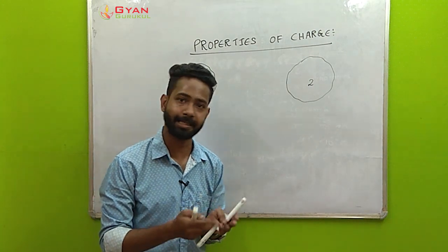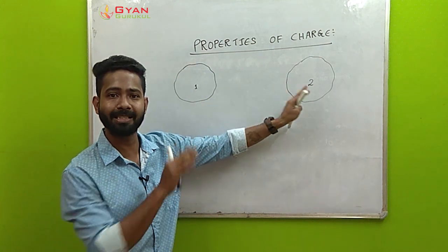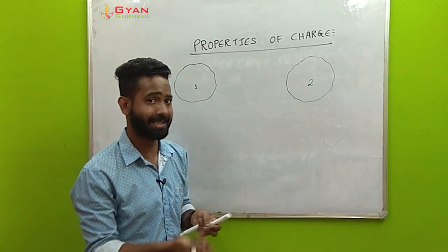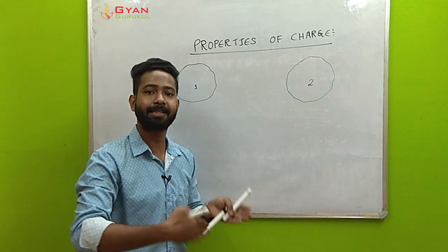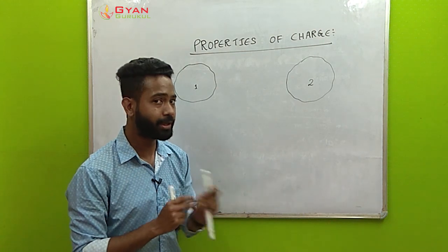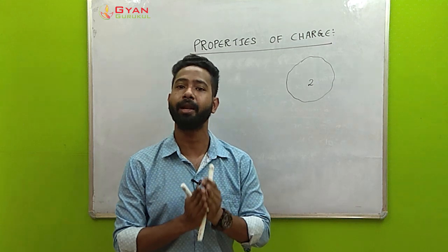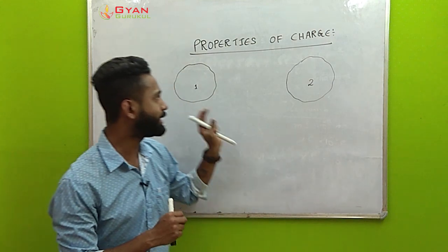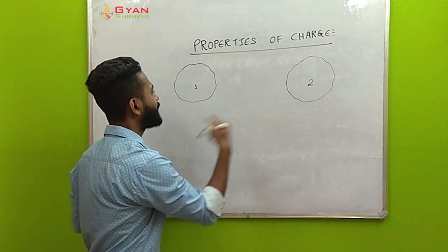If a body has a deficiency or excess of charges — excess positive or excess negative — then it is called a charged body. When there are equal amounts of protons and electrons it is a neutral body. So a body can either be positively charged, negatively charged, or neutral.